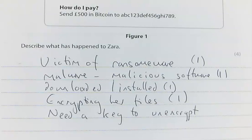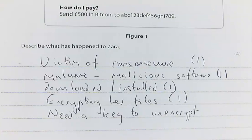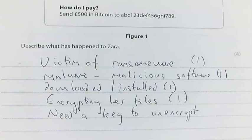Zara is a victim of ransomware — she's got to pay a ransom to get her files back. One mark. It's malicious software — malware — downloaded onto her computer. That's another mark. It has encrypted her files, so she'll need a key to decrypt them. The best way to avoid this situation is to back your files up. If someone tries to hold you to ransom you can just wipe your computer clean, knowing your files are backed up. Those four points get us four marks.